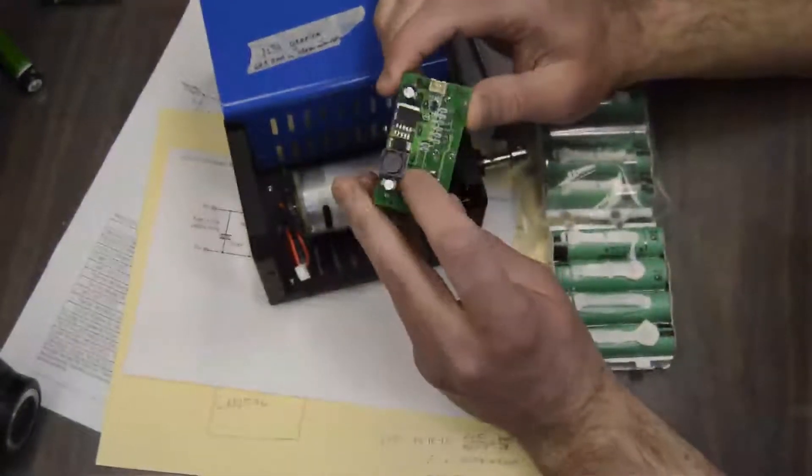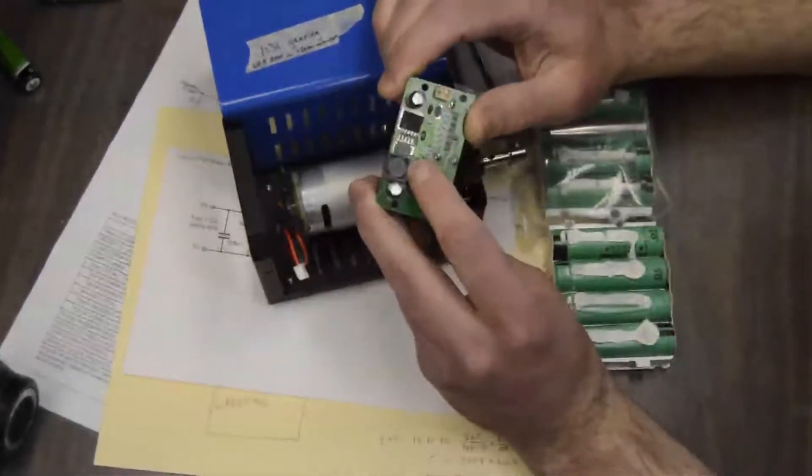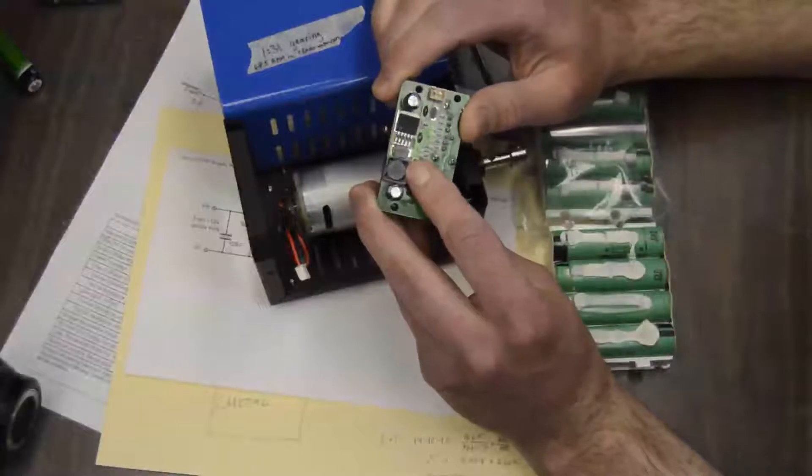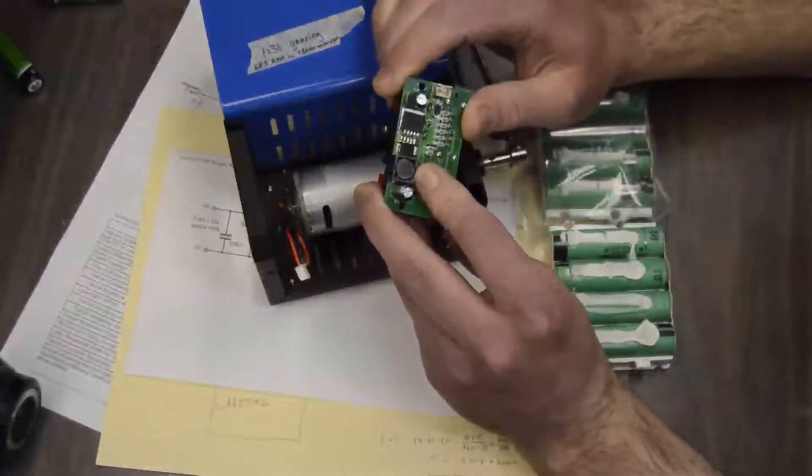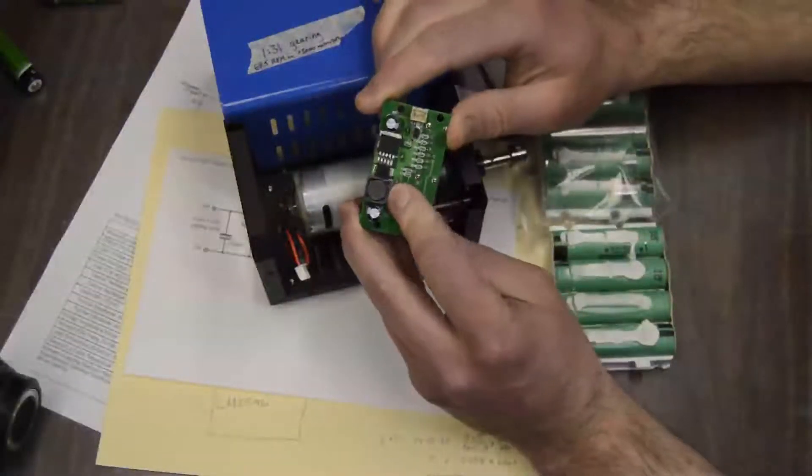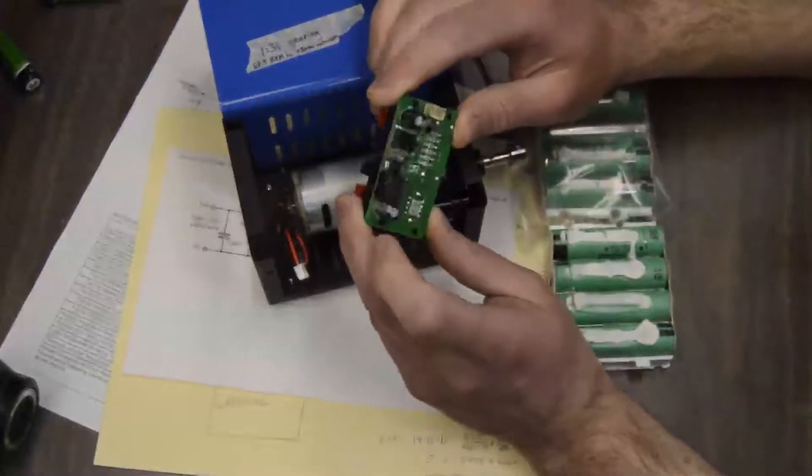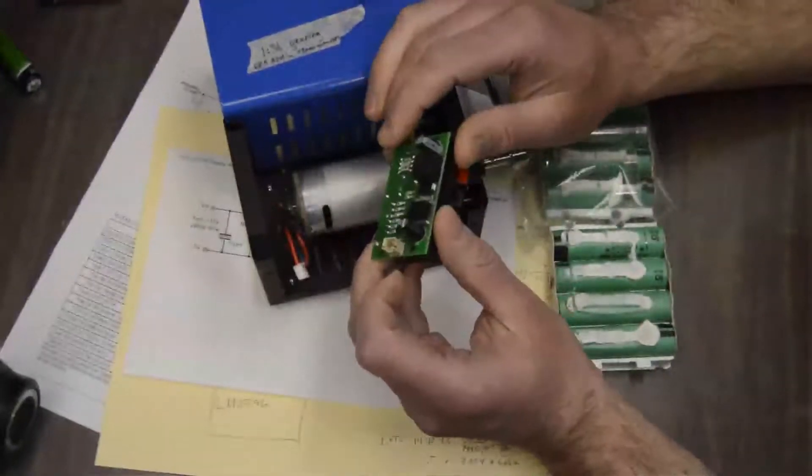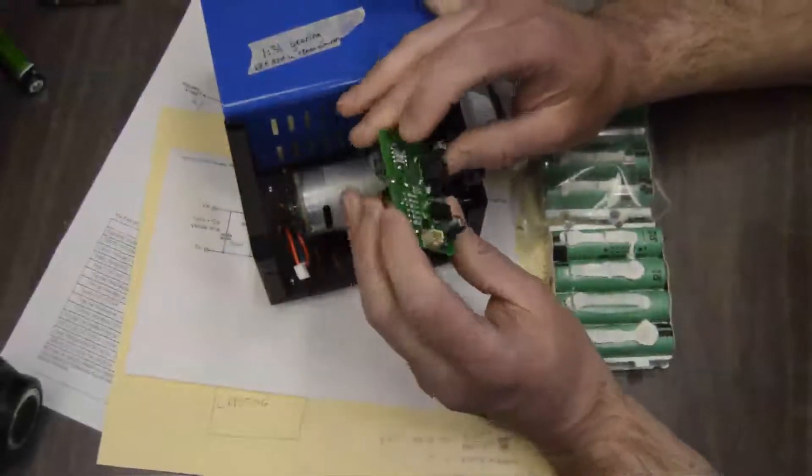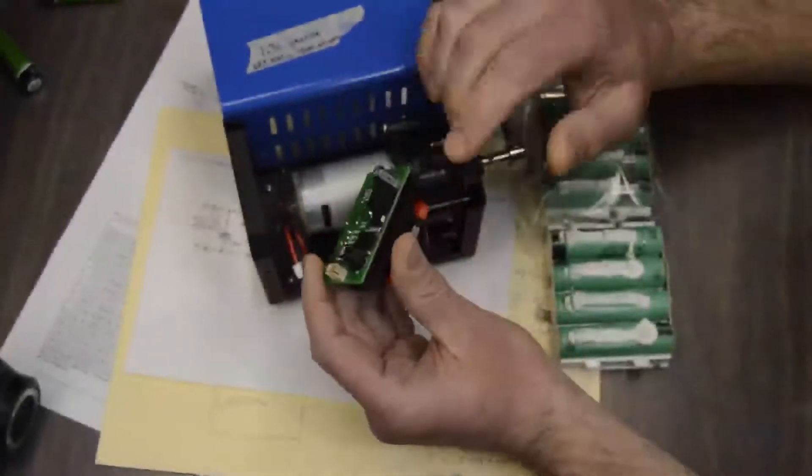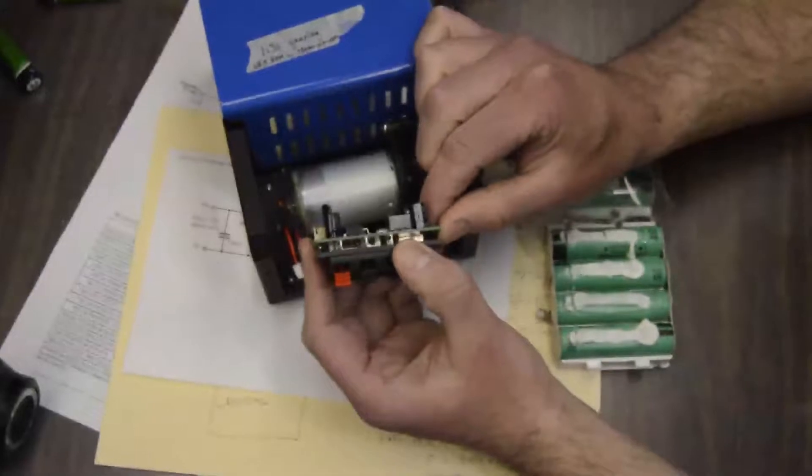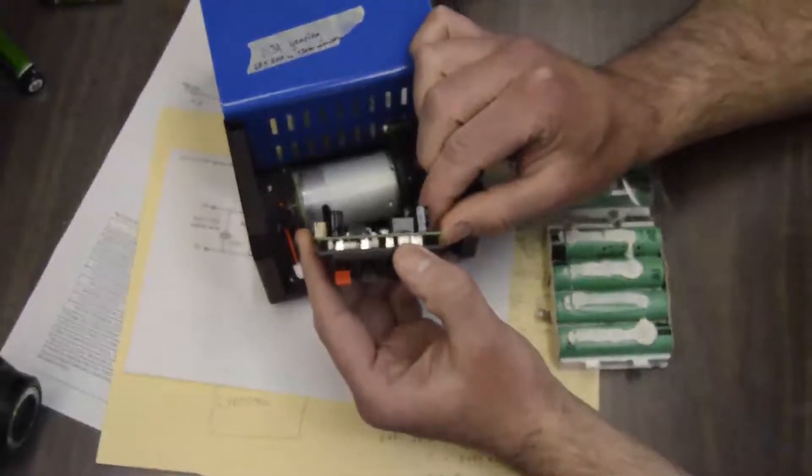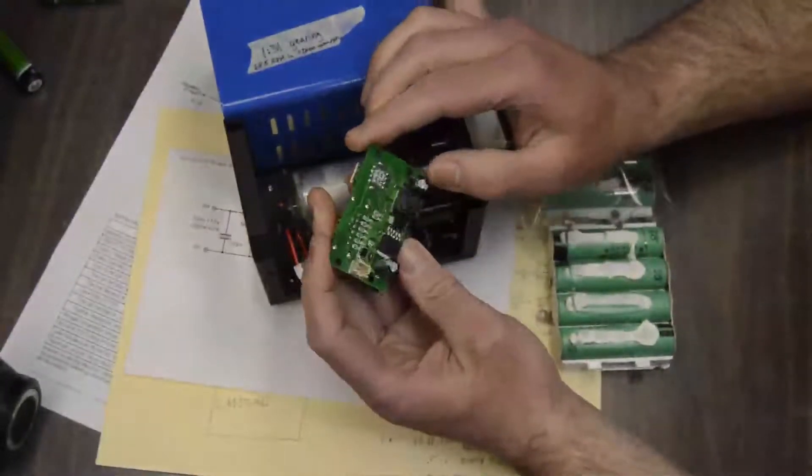And this inductor, I think is a problem. I think if you replaced this with a high current rated inductor closer to the 33 to 68 micro Henry range, it would be better. I don't want to try taking this one off of here because, like I said, it's a surface mount component and all the contacts are underneath, and I would just wreck them trying to get this off.